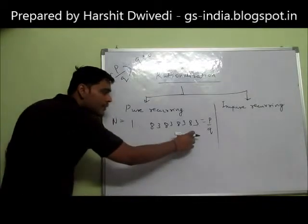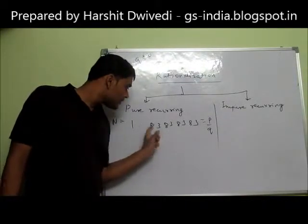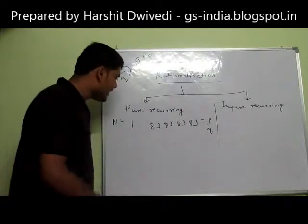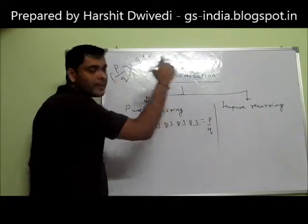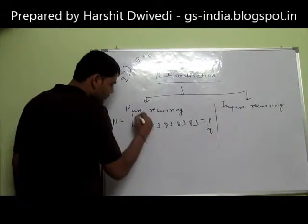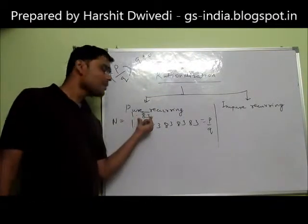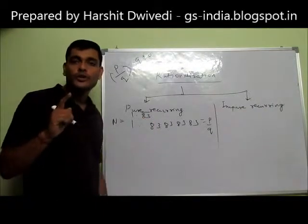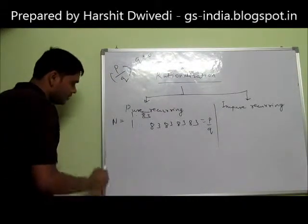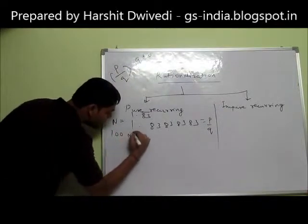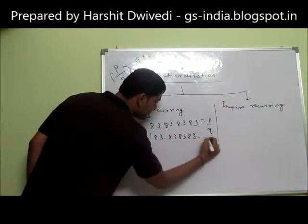So let us try: n = 1.838383. How many numbers are repeating themselves after the decimal? It is the pair 83 that is repeating itself again and again. So this number can also be written as 1.83̄. Now, how many numbers are repeating? Two numbers. So two zeros, that means 10 to the power 2, or 100. We are going to multiply this number n by 100.